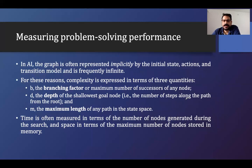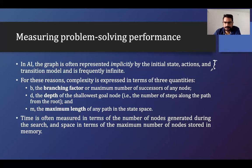In artificial intelligence, the graph is often represented implicitly by the initial state, action, and transition model, and is frequently infinite. The graph representation will be used in finding the solution. We have the initial state as the root node from where we will start the actions. We have different actions which are defined, and the transition model which is defined. So ultimately the problem, as we have seen how we define the problem, will be represented using the graph.